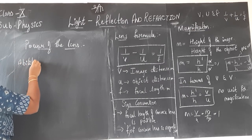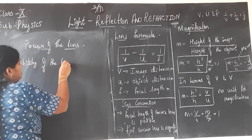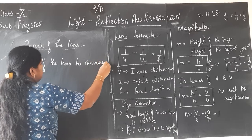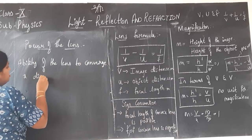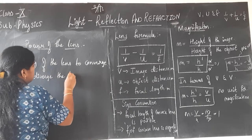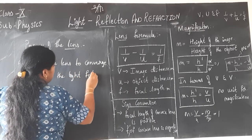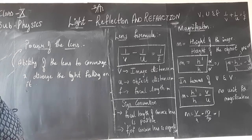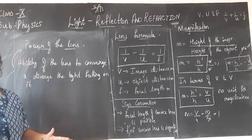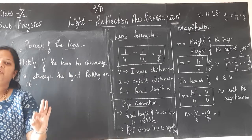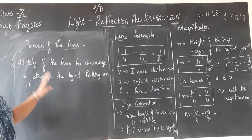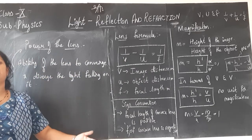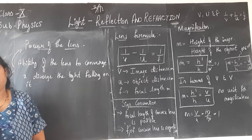The ability of the lens to converge or diverge the light falling on it is called the power of the lens.